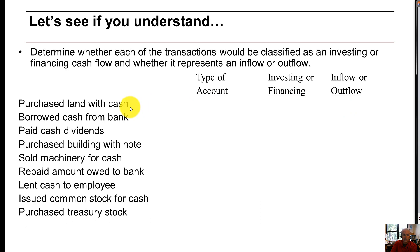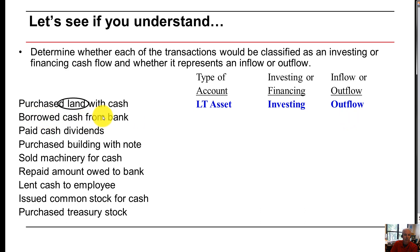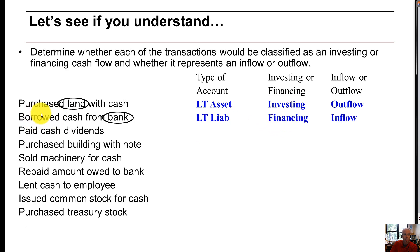The type of account is long-term asset, it is investing, and it is an outflow — so we were right. Next: borrowed cash from the bank. 'Borrowed' is a signal word. When you borrow cash from the bank, it's a long-term liability, so it's reported in the financing section. Since we borrowed, cash came in — it's an inflow.